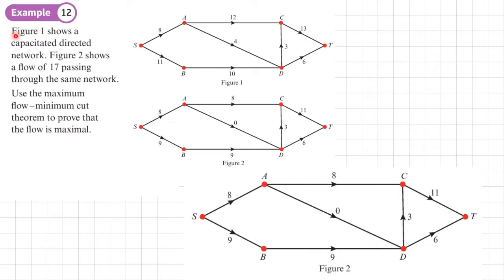Example 12: figure one shows a capacitated directed network, and figure two shows a flow of 17 passing through the same network. We need to use the maximum flow minimum cut theorem to prove that the flow of 17 is maximal.